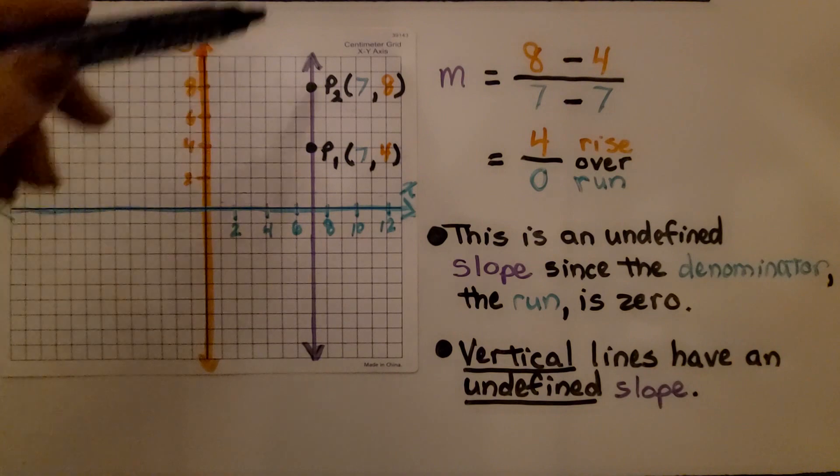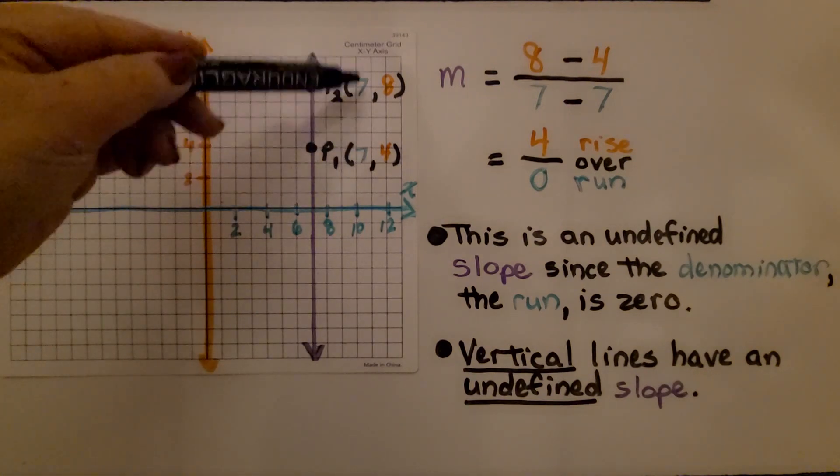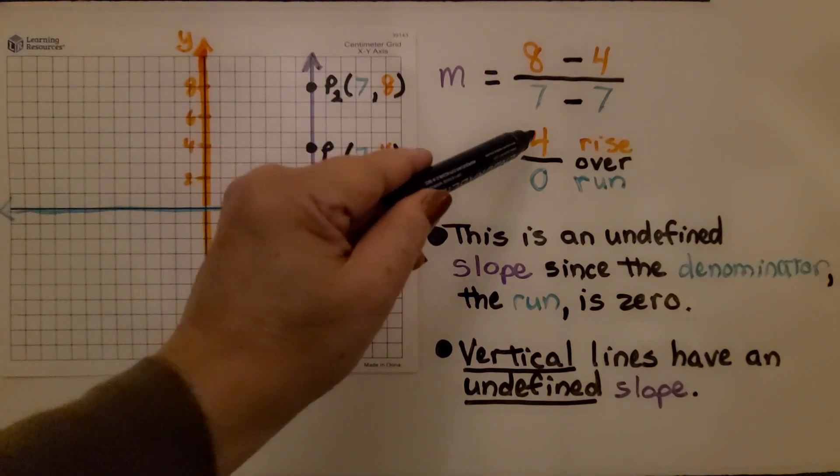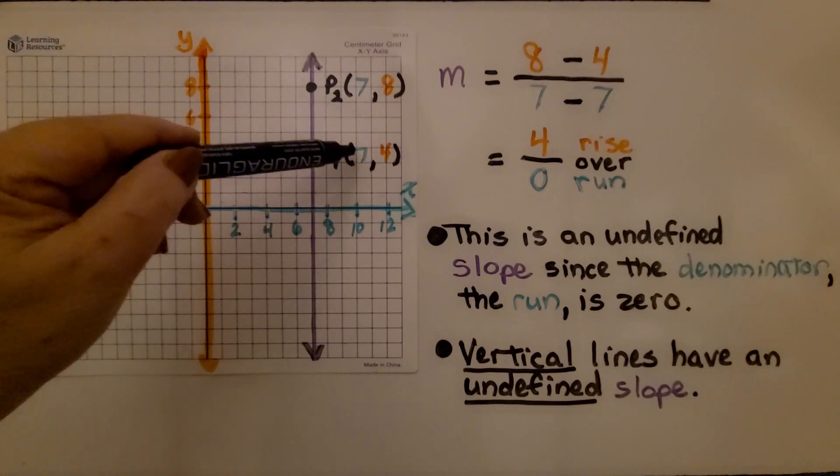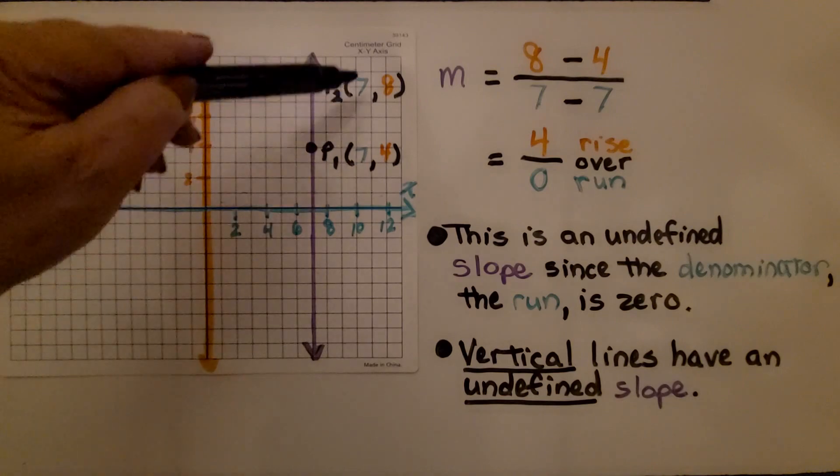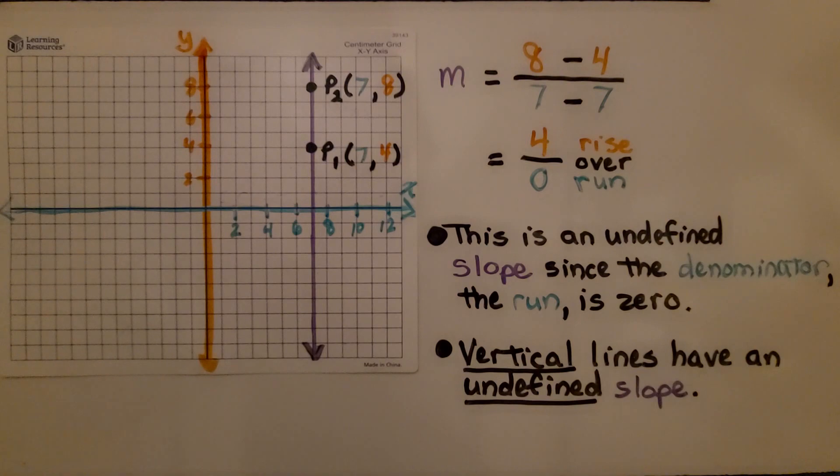Now this line is going vertically. If you notice, the x values are the same. When we do the slope formula, we do 8 minus 4, which gives us a 4. And 7 minus 7, which gives us a 0. So our rise over our run is 4 over 0. This is an undefined slope since the denominator, the run, is 0. Vertical lines have an undefined slope. As soon as you see that the x values are the same, you know it's going to be a vertical line, and then it's going to be undefined.